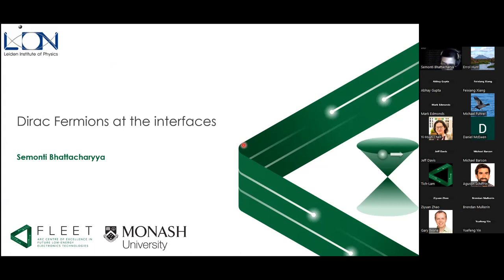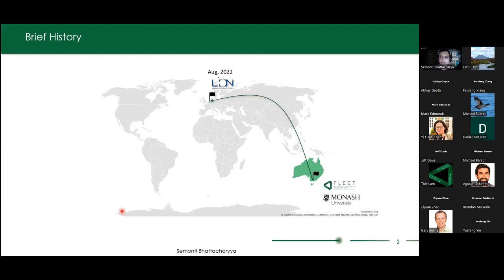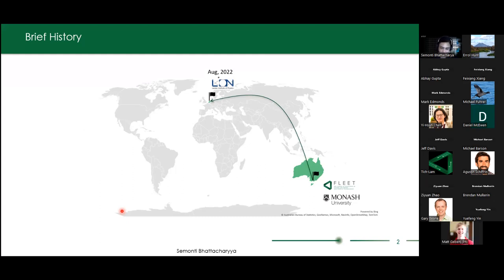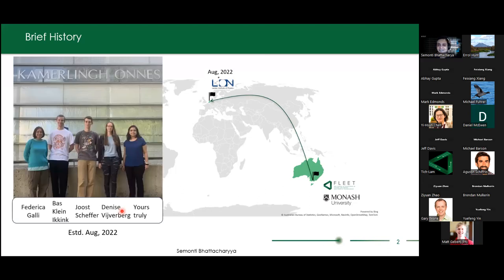Good afternoon, everyone. It is great to meet you again. Today I'm going to mainly talk about the work I did during my time at Monash. Until June this year, I was at Monash working as a postdoctoral research fellow, as well as a Women in Fleet fellow in Michael Fuhrer's lab. In July, I moved to the Netherlands and started a new group at Leiden Institute of Physics. The group just started from August, so it is a budding group.